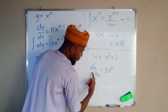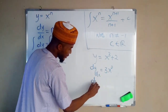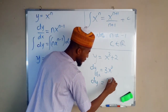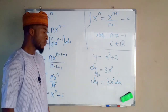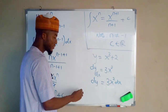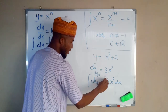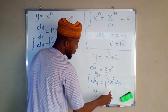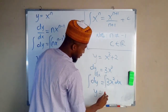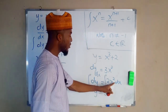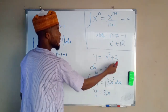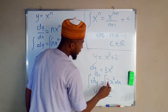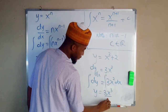First of all, multiply both sides by dx so that we have dy on the left hand side, and 3x squared dx on the right hand side. Let's apply integration to both sides. On the left hand side we have y, and on the right hand side we have 3x squared. Applying the formula: the index n is 2, so we add 1 to get 3, then divide by n plus 1, which is 2 plus 1, also 3.